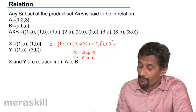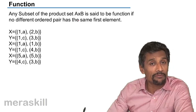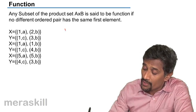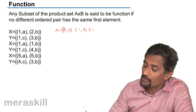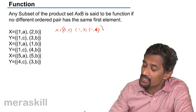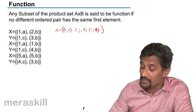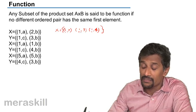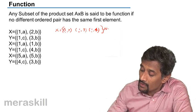Now, among these relations, any subset of the product set A cross B is said to be a function if no two different ordered pairs have the same first element. For example, suppose you have a relation X = {(1,2), (1,3), (1,4)}. This remains just a relation because the first element in each ordered pair is the same. If two ordered pairs have the same first element, then it is not a function.